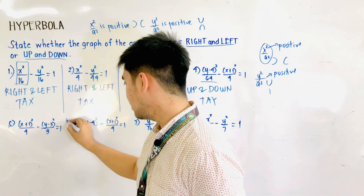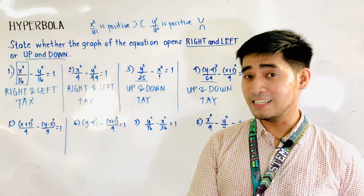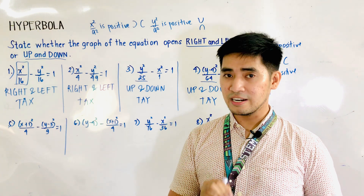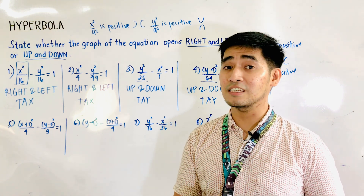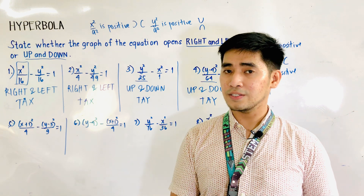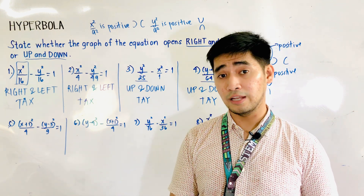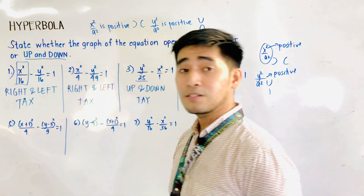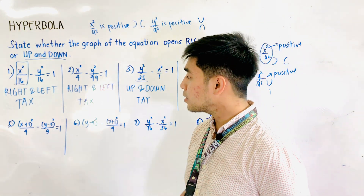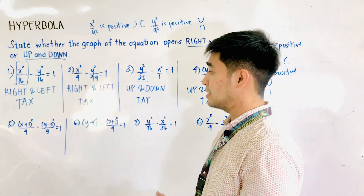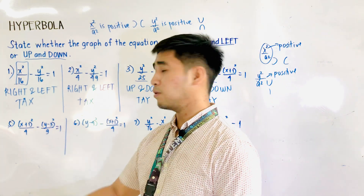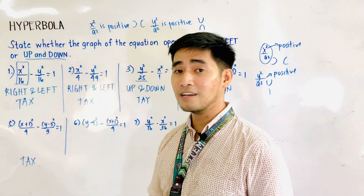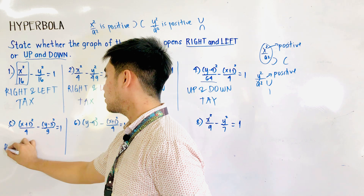This is very easy to identify the nature of the graph of the hyperbola as long as you know the transverse axis — transverse axis x means right or left, transverse axis y means up and down. We have x plus 1, quantity squared, over 4 minus y minus 3, quantity squared, over 9 is equal to 1. Since x plus 1 quantity squared over 4 is positive, therefore this is TAX. And when we have TAX, the nature of the hyperbola is right and left.